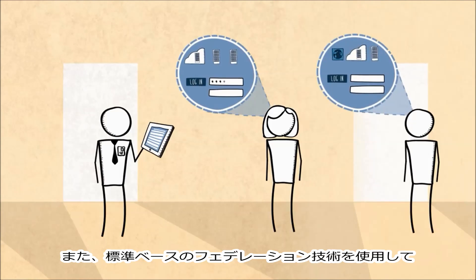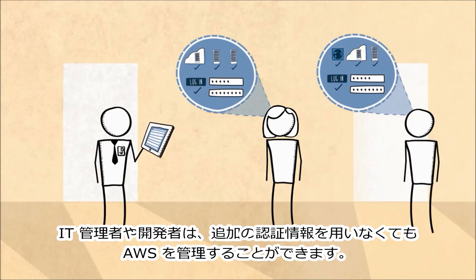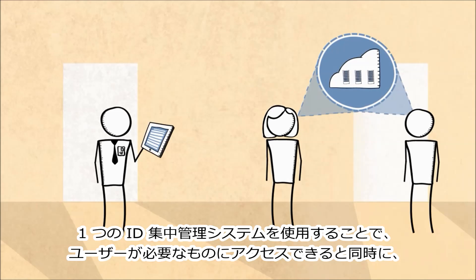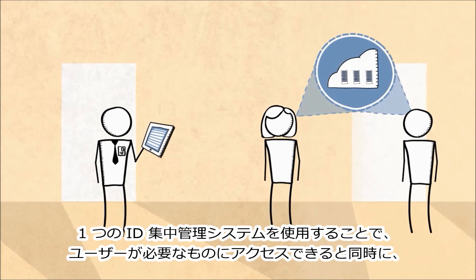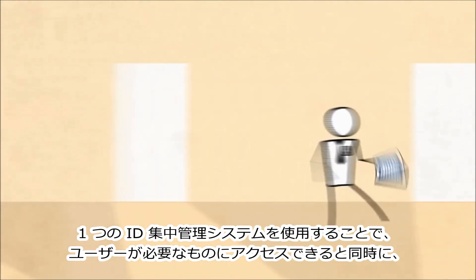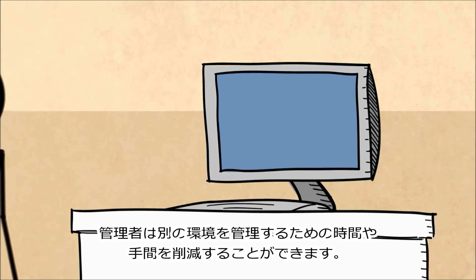You can also integrate your existing identity system, such as Microsoft Active Directory, using standards-based federation technologies so that IT admins and developers can administer AWS without needing additional credentials. By using one central identity management system, you can spend less time and effort administering yet another environment while ensuring everyone gets what they need.